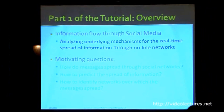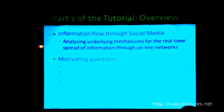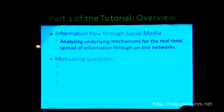The first part has three components: how do we collect data and track the flow of information online; modeling and predicting the flow of items and information; and how do we infer networks over which information flows, because these networks are many times hidden or invisible.